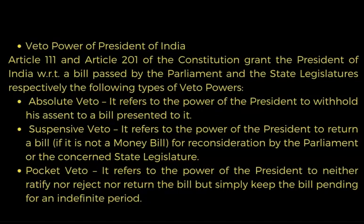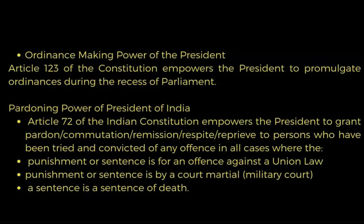Veto power of the President: Articles 111 and 201 of the Constitution grant the President veto powers over bills passed by Parliament and the state legislatures respectively. The types of veto powers are: Absolute veto — the power to withhold assent to a bill; Suspensive veto — the power to return a bill, if it is not a money bill, for reconsideration by Parliament or the concerned state legislature; Pocket veto — the power to neither ratify, reject, nor return the bill, but simply keep it pending for an indefinite period.